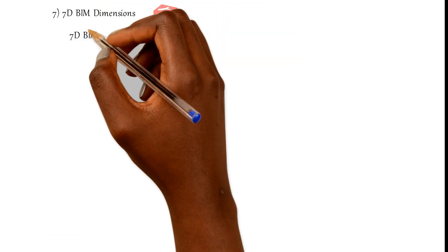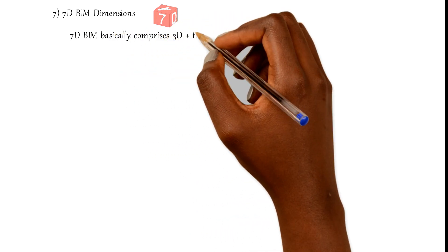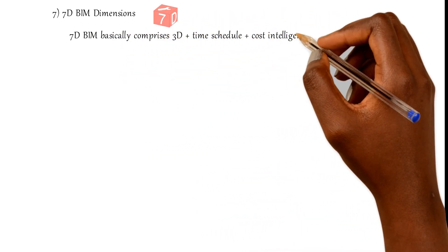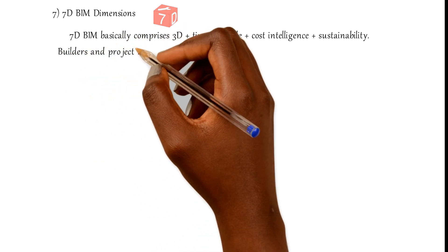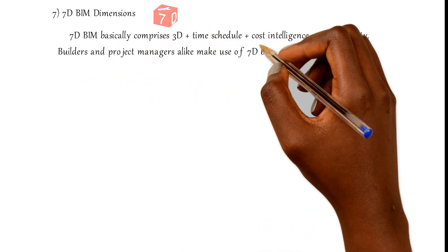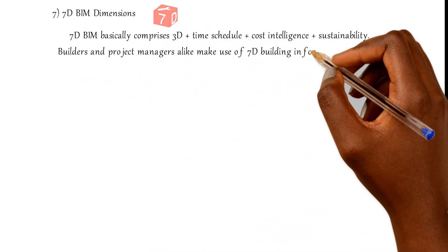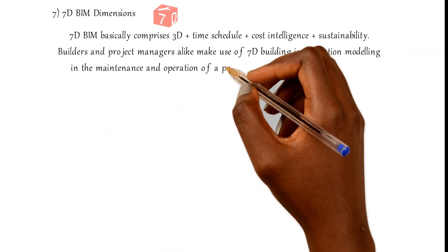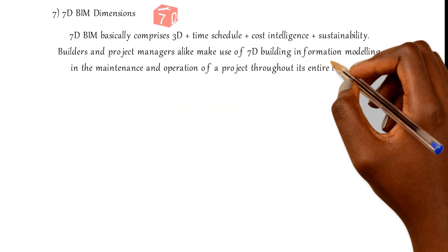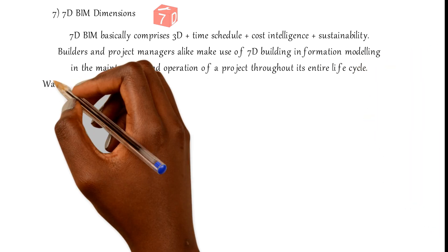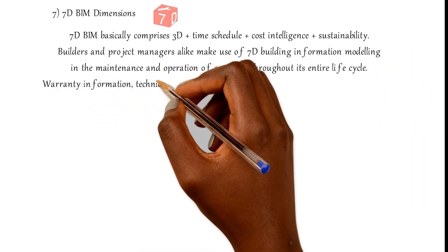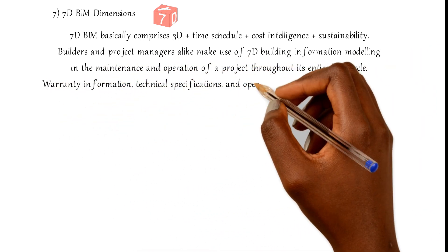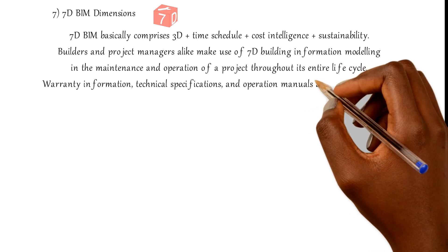Number seven: 7D BIM dimensions. 7D BIM basically comprises 3D plus time schedule, plus cost intelligence, plus sustainability. Builders and project managers make use of 7D BIM in the maintenance and operation of a project throughout its entire life cycle. Warranty information, technical specifications, and operation manuals are some of the asset data that can be tracked using this dimension.